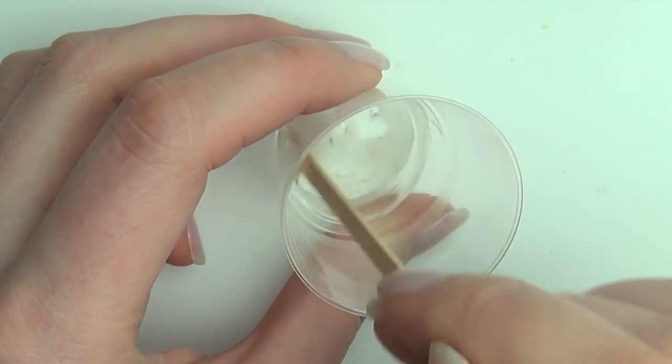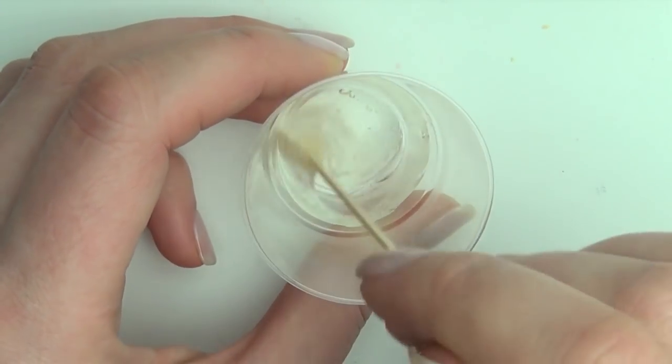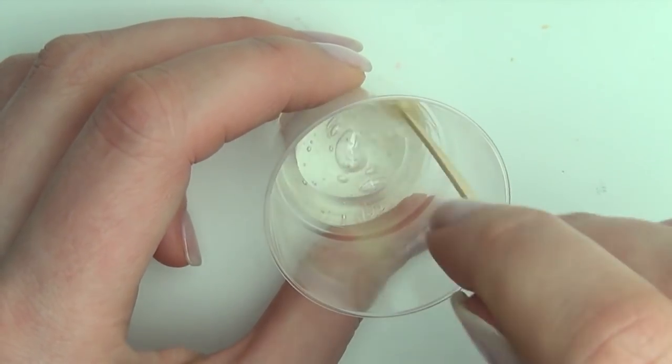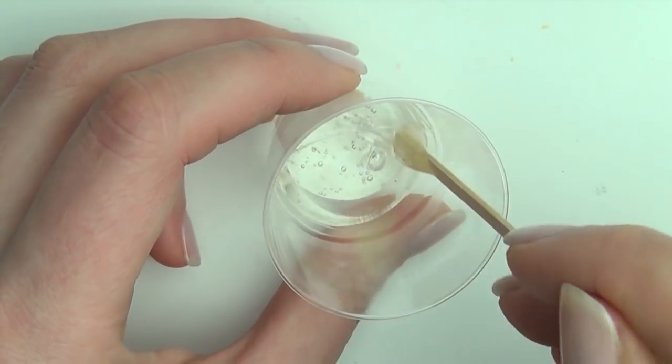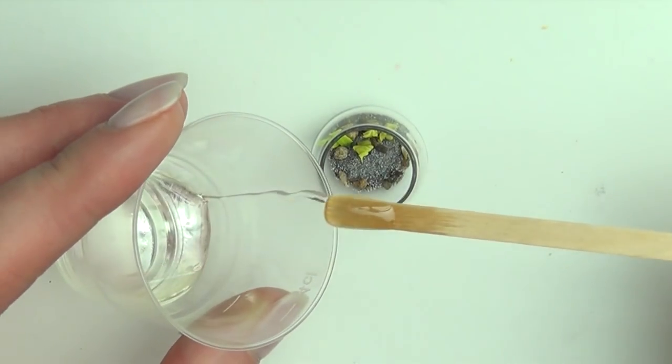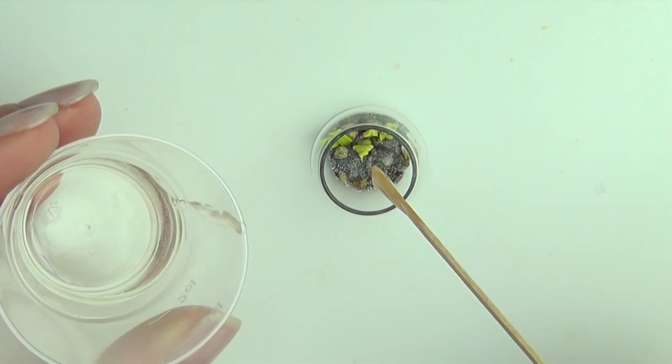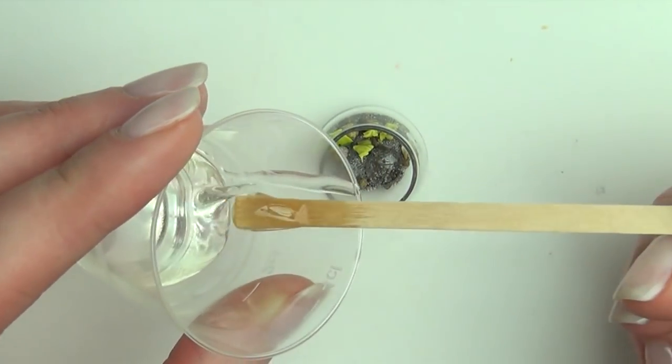I ended up having a lot of bubbles in my finished project, and I think it was because I mixed my resin together too violently and incorporated too much air, so be mindful of this. Let the resin sit for a little, which will get rid of a lot of the air bubbles, and then start dripping it gently into the bowl.